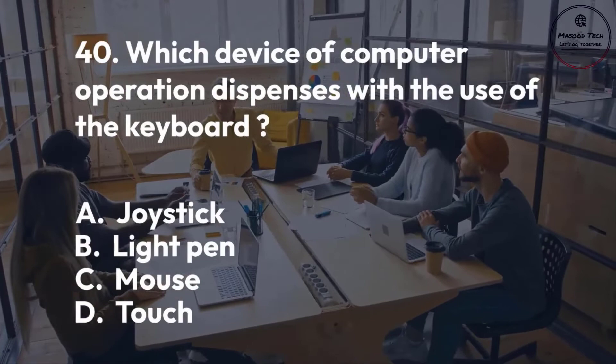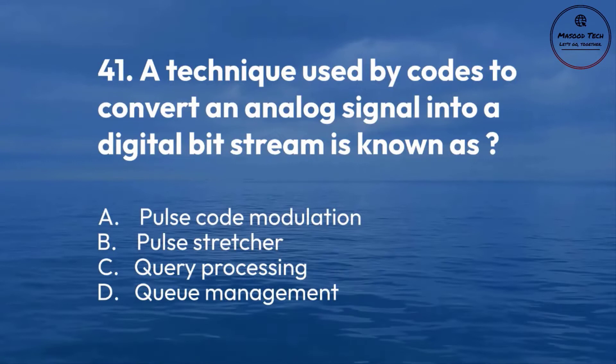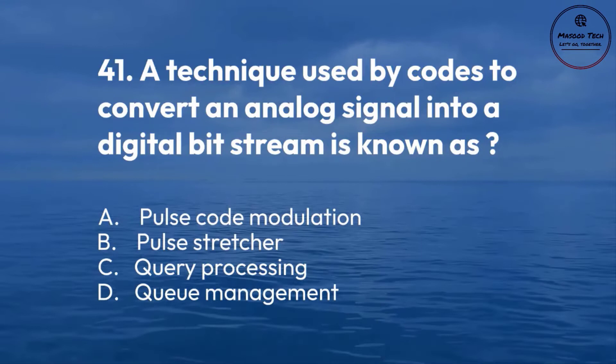Number 41. A technique used by codecs to convert an analog signal into a digital bit stream is known as: A. Pulse Code Modulation. B. Pulse Stretcher. C. Query Processing. D. Hue Management. Correct answer is A.